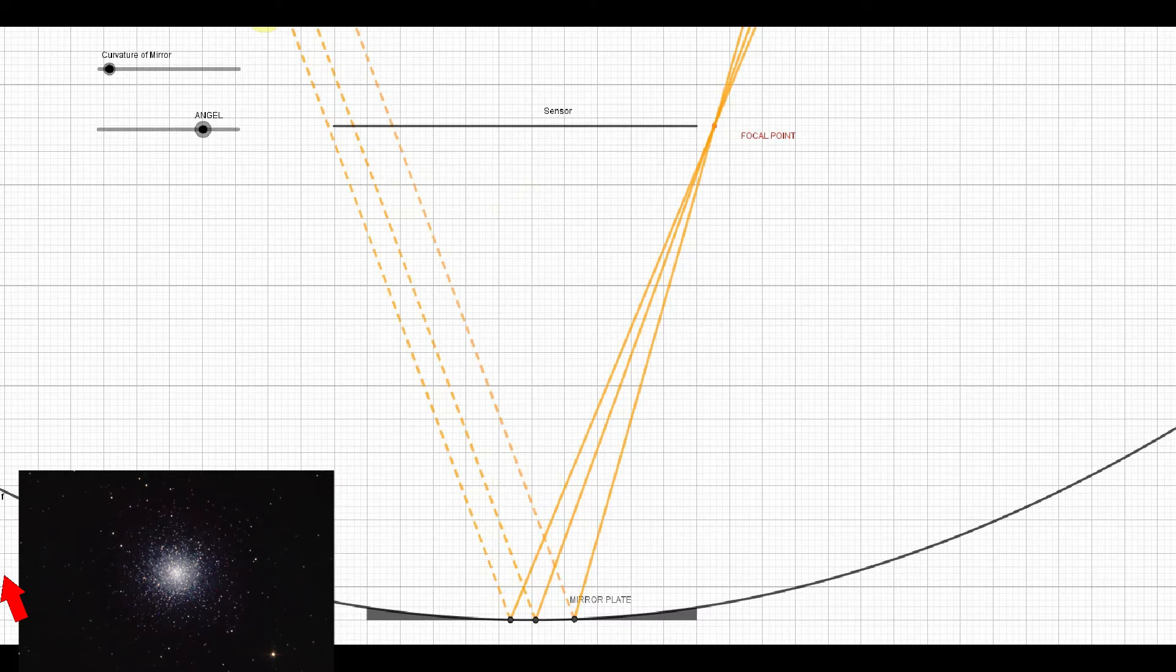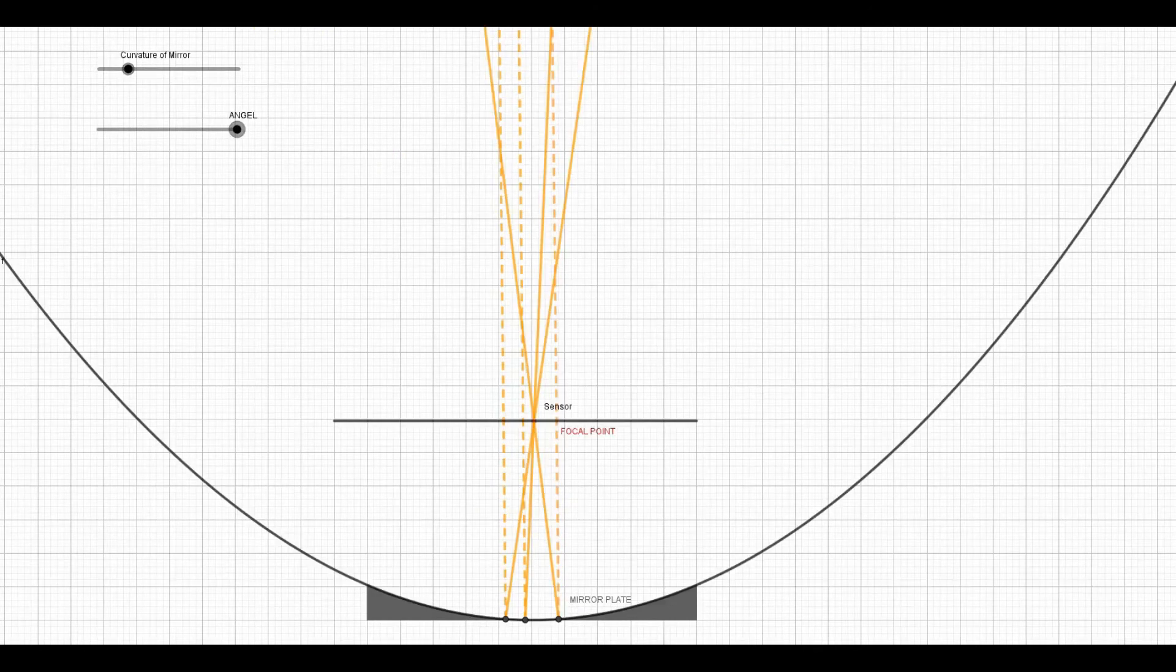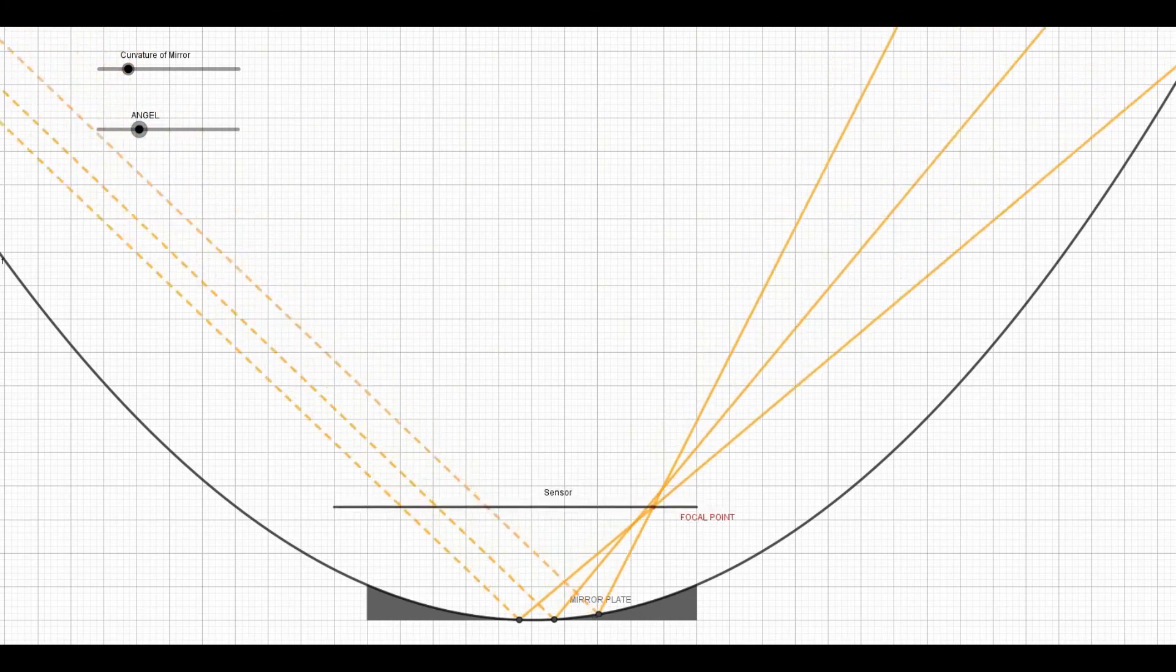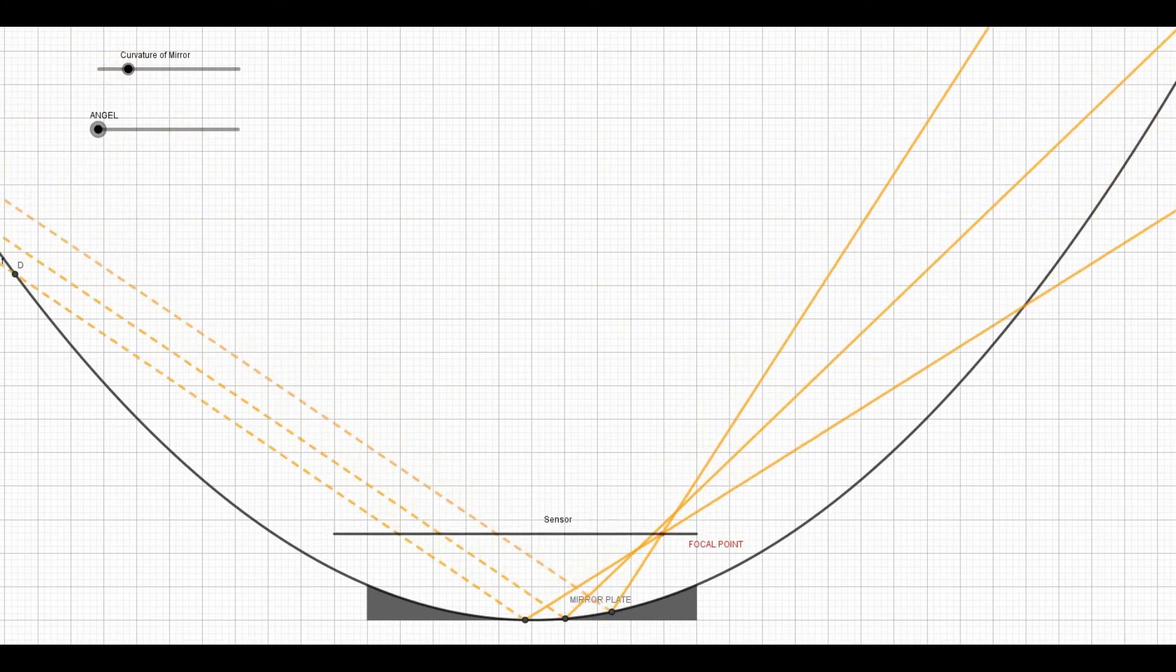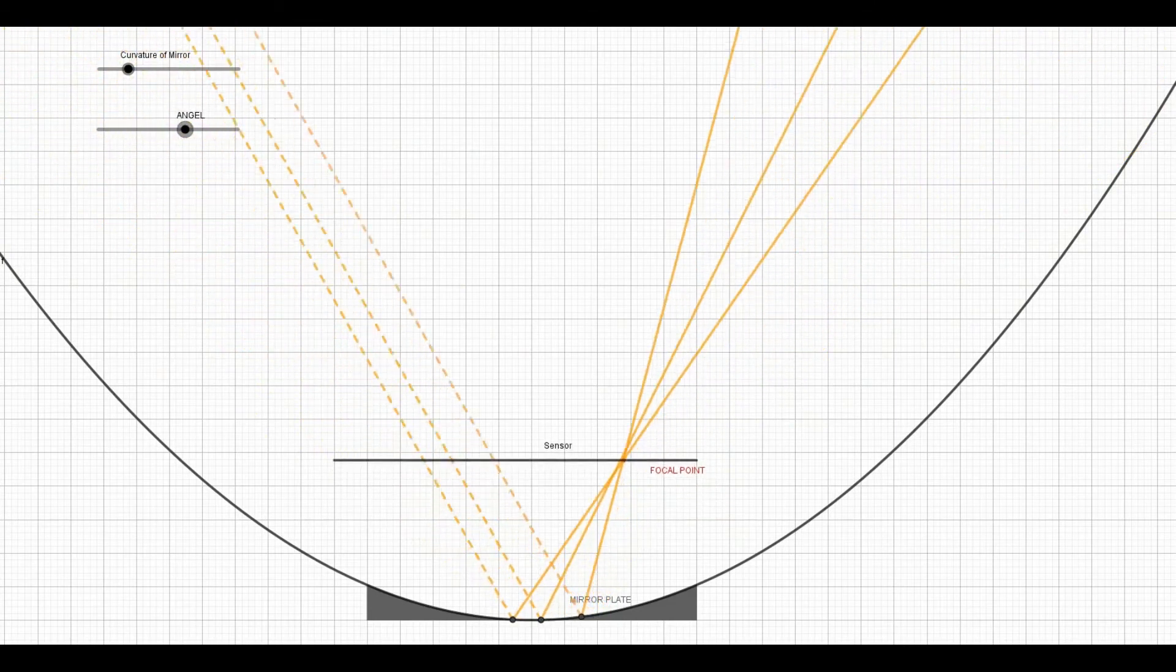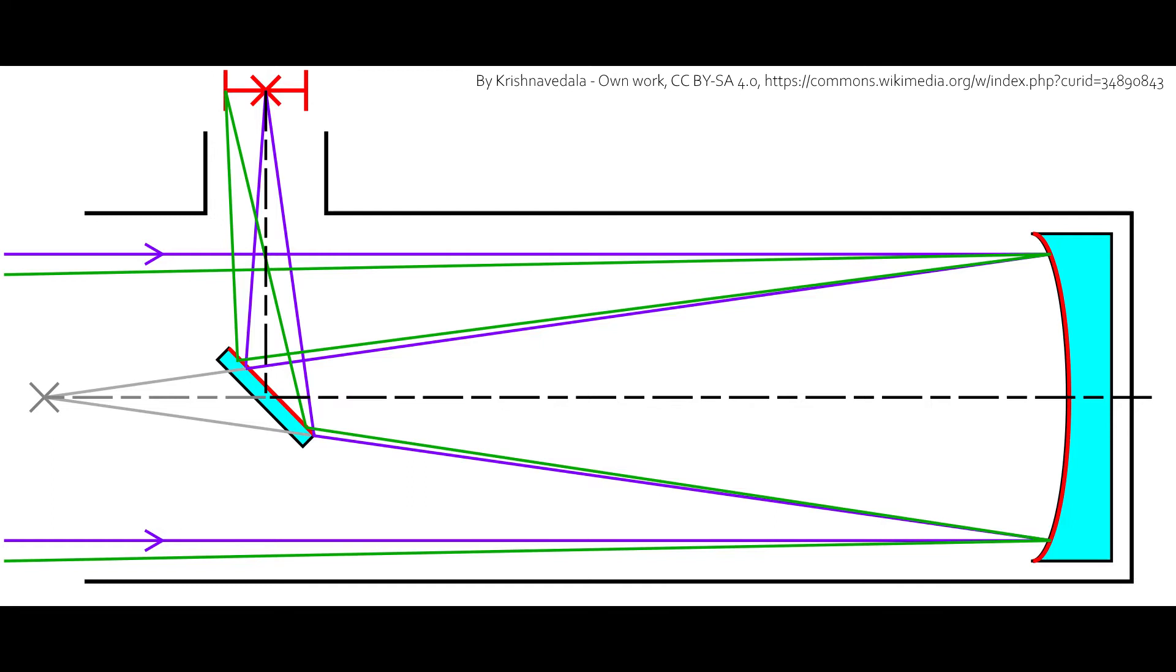And if we decrease the focal length, then look, even stars with an even bigger angle can be projected onto the sensor. So in other words, we can observe stars that are even further away from the center of the image, so our FOV is now larger.